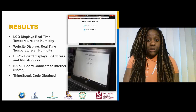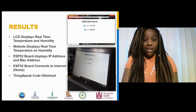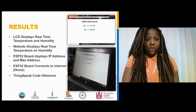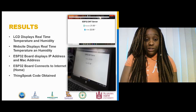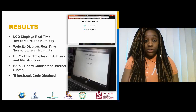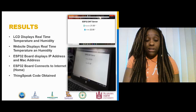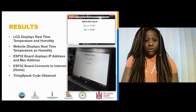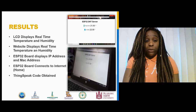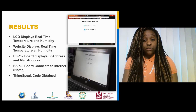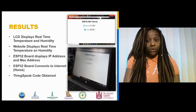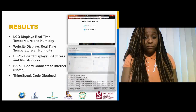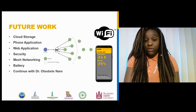Going forward, I would really like to use ThingSpeak as my cloud storage for keeping my data, and I'd like to start on a phone application and a web application that notifies the user and also displays the current temperature and humidity, with graphs and charts to display the history of the room environment. As for security, I would like to improve on the security of the website — I was looking into Bro and other security protocols for the application and the device, such as encryption. I also want to include mesh networking, which would be very useful for the device.